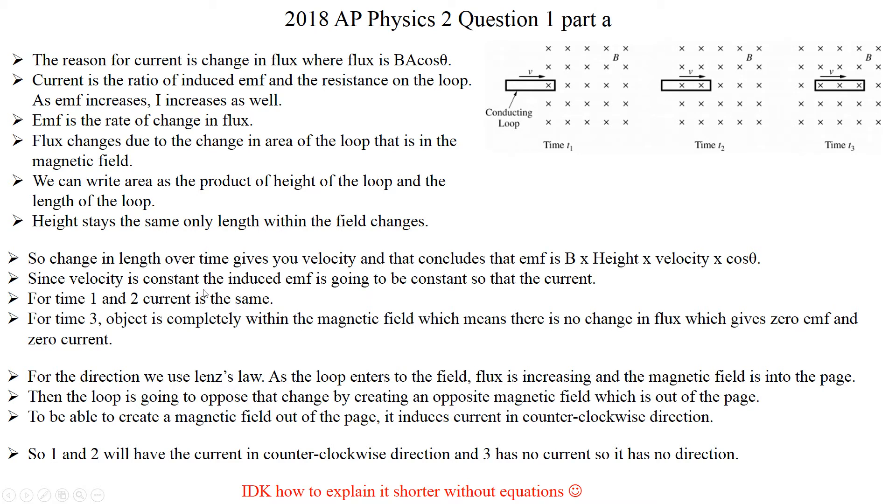Since velocity is constant, so throughout the motion, loop is going at a constant speed, that means your induced EMF is going to be constant. If EMF is constant, then your current will be the same for time 1 and time 2, because EMF is directly related with current, and EMF is directly related with flux. Flux is constant, so current for first part and second part is going to be the same.